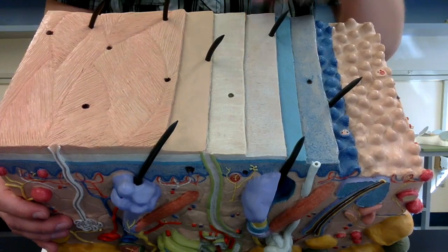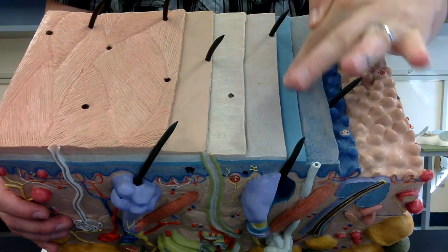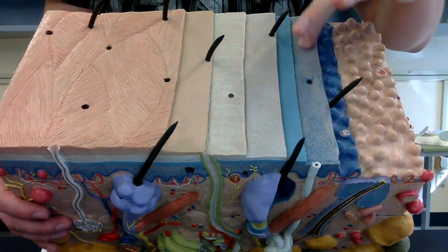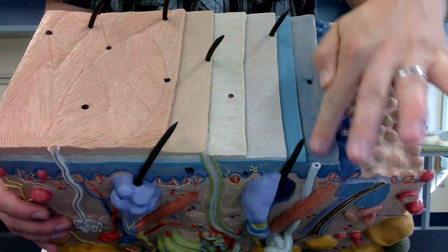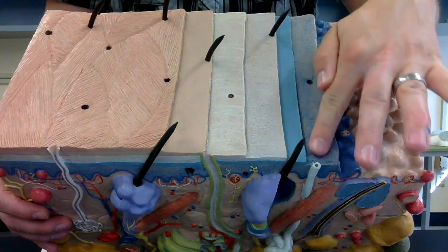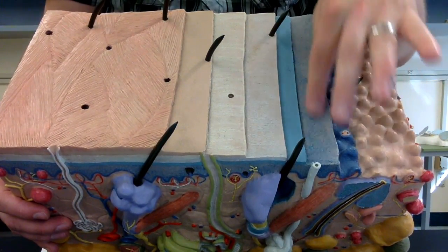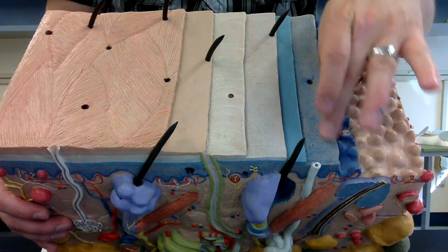Then our fourth layer in is going to be the stratum spinosum, which is this light blue right here. And then kind of this discolored blue right here is going to be your stratum basale or stratum germinativum. Stratum germinativum is a little bit easier to remember, but both terms are accepted.